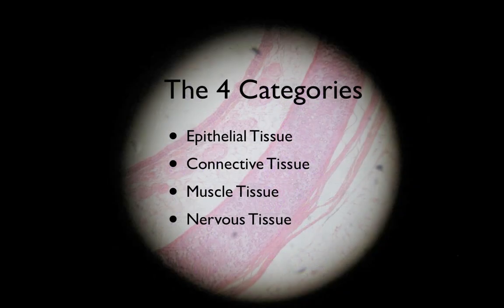Usually they'll start by saying there's four categories of tissues, and the first thing you have to do is figure out what category the tissue you're looking at is in. That sounds great, but it's actually really hard to do.